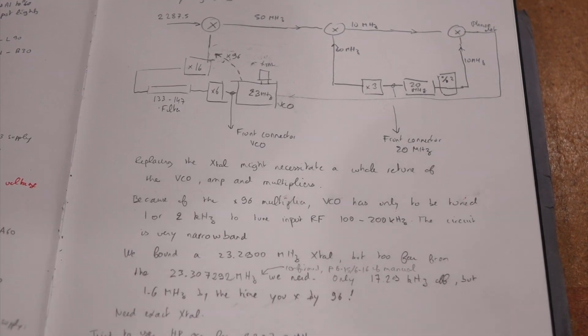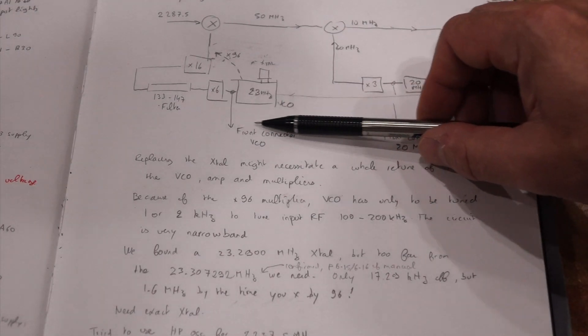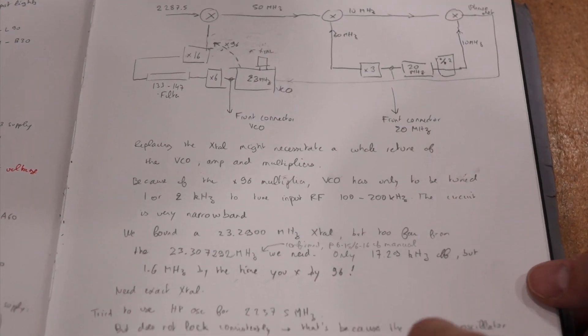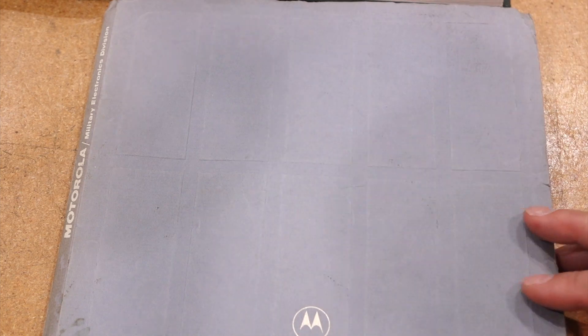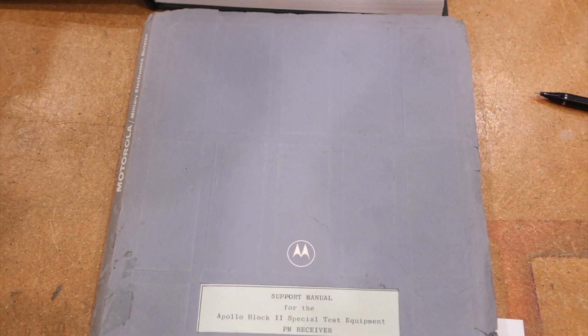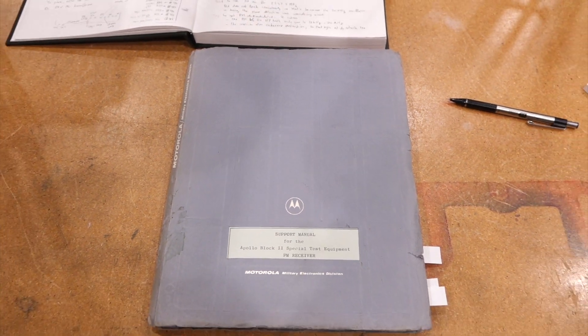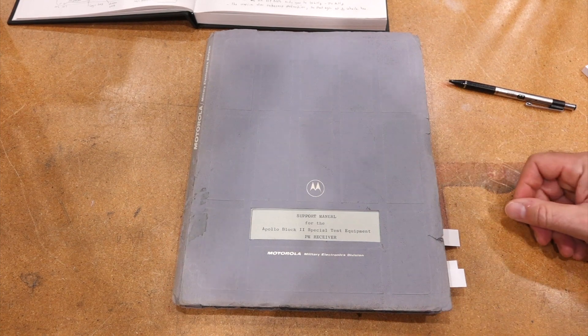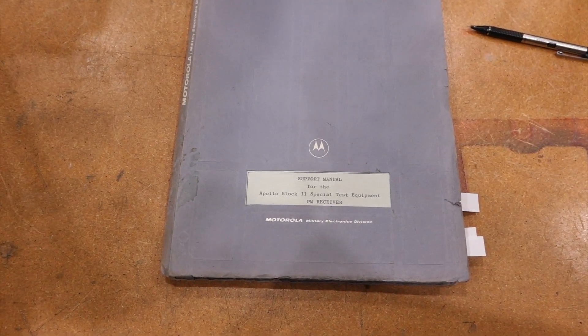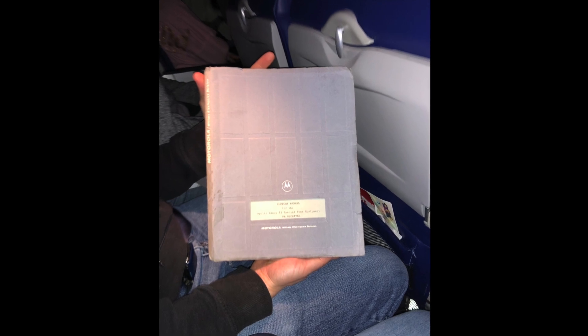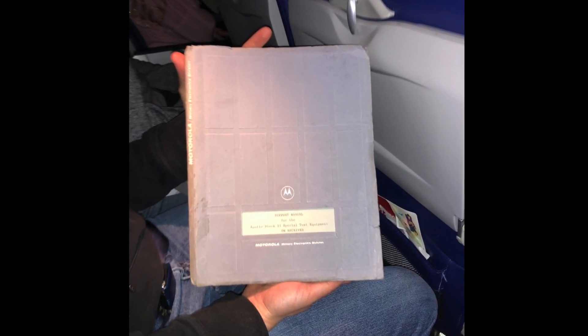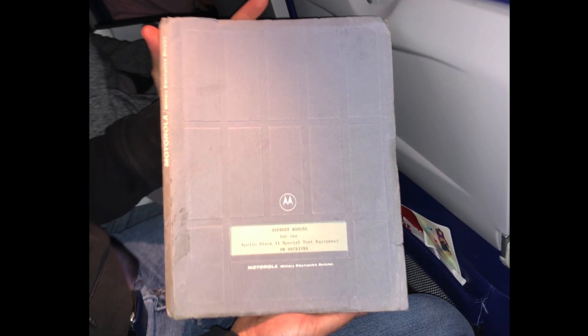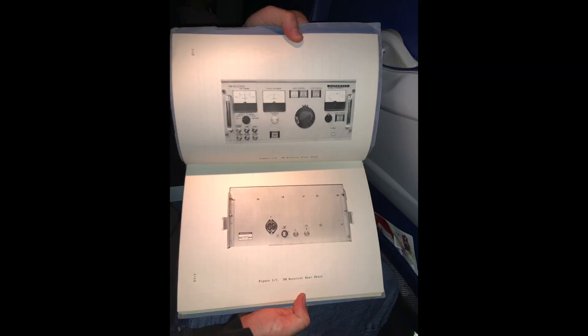So this looked quite challenging. And we were about to reverse engineer the whole VCO, when we went on a little trip to a collector. We had to fly there. And it's a collector that is both generous and very private, he wants to remain anonymous. But guess what he gave us? I snapped this in the plane on our way back. It says PM receiver support manual, and it's from Motorola. Hmm, does this box look familiar? Yes, that's our receiver, and that is its missing manual.